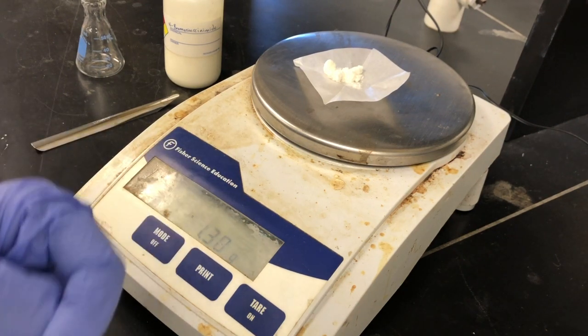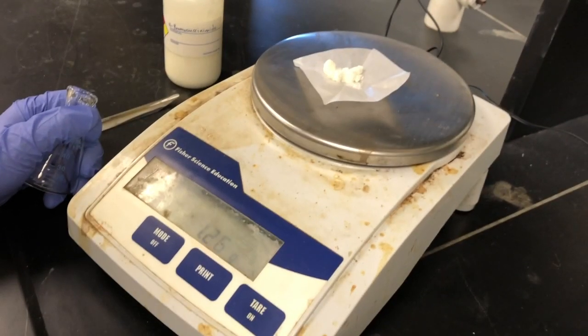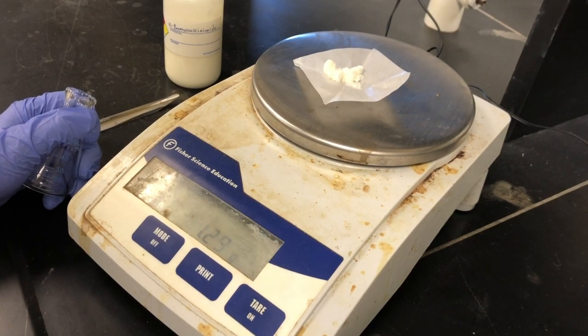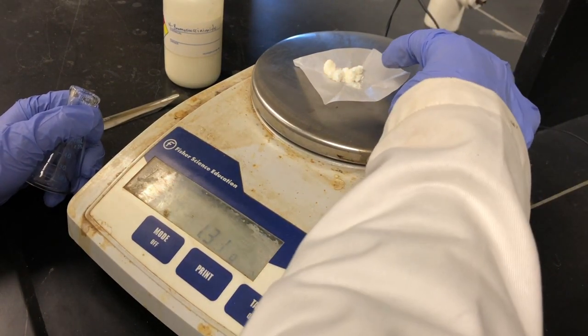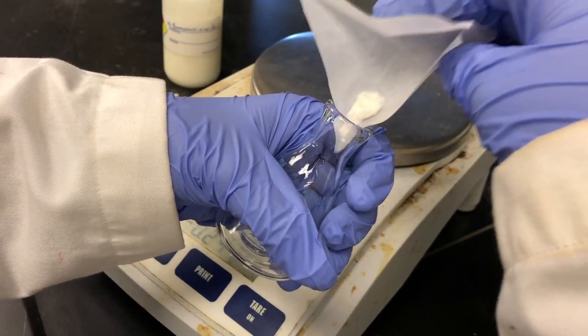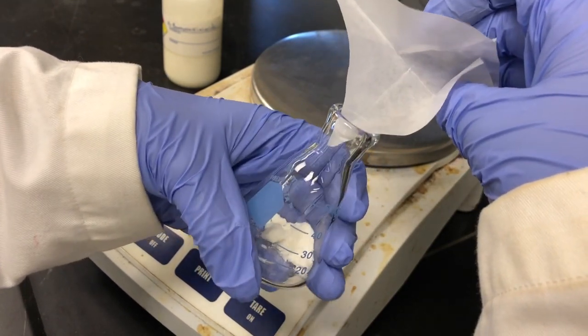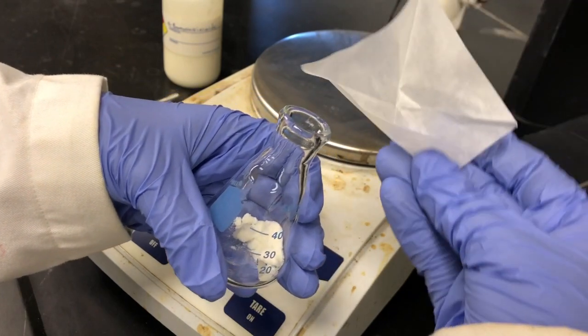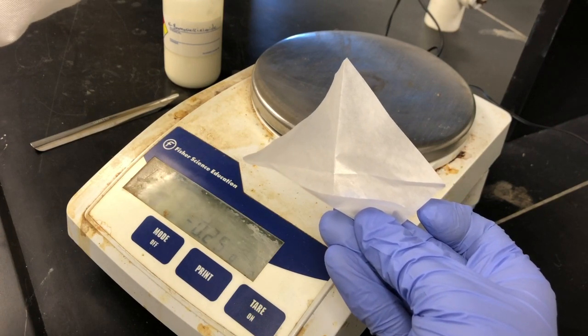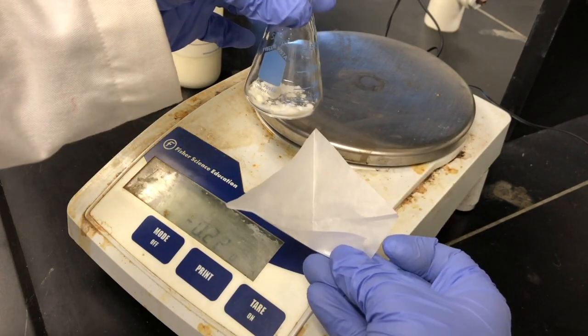Remember, your very last digit is your uncertainty digit. 1.30 is going to have to be it. I'm going to transfer that right into the flask. Make sure you don't drop any, because if you drop any, your initial mass is no longer accurate. Notice there's nothing left on the weighing paper, everything that we needed of NBS is right in the flask, and we didn't really make any sort of mess.